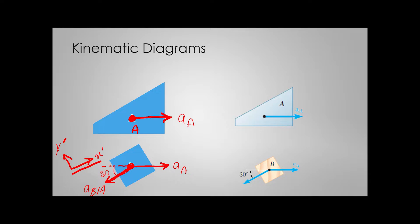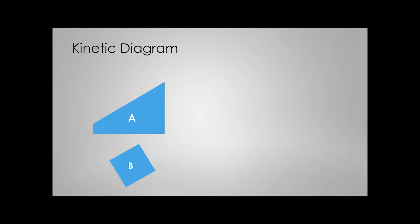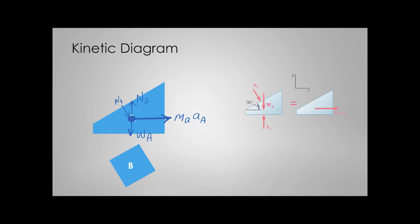Now we know the directions, let's talk about the kinetics and the forces applied to our bodies. For the free body diagram of A, this body is subjected to its own weight and a normal force exerted by the surface below, N. It is also subjected to another normal force exerted by the body moving on it — I'll denote these N1 and N2. We have assumed body A is moving to the right, so the kinetic diagram is the mass of A multiplied by its acceleration.